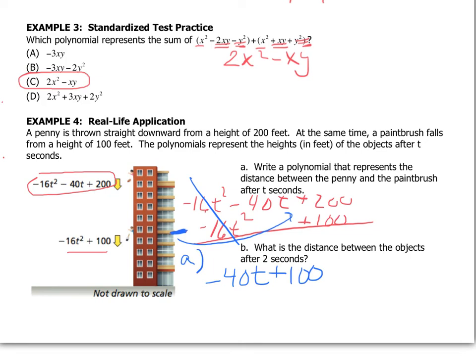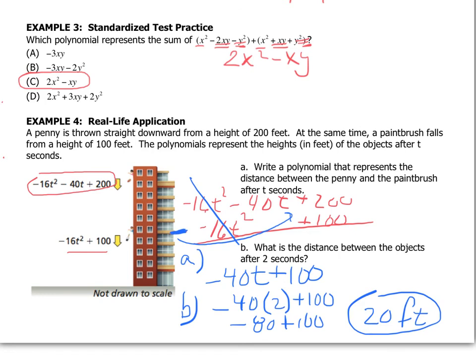So for B, what we need to do is to figure out, well, after two seconds, what is the distance between these two objects? Well again, I'm just going to plug in two seconds to figure out where the distance of them is. We get -80 + 100. Negative 80 plus 100 says that they are 20 feet apart because we combine the two different polynomial models and after two seconds they will be 20 feet apart.